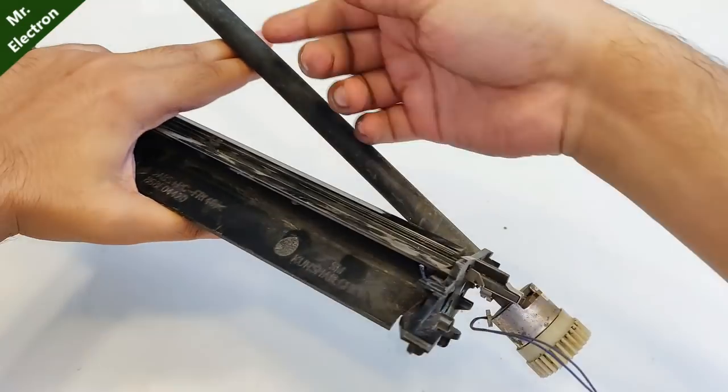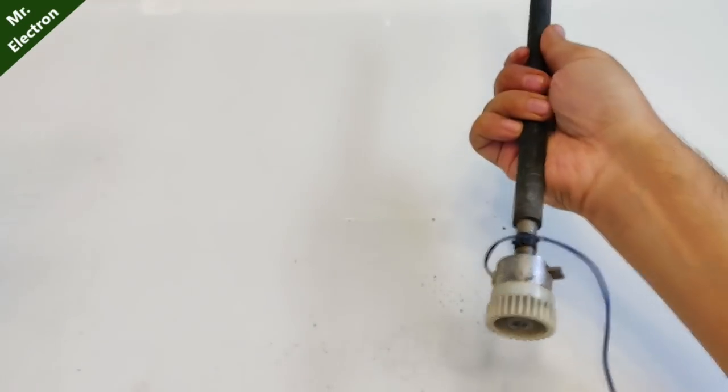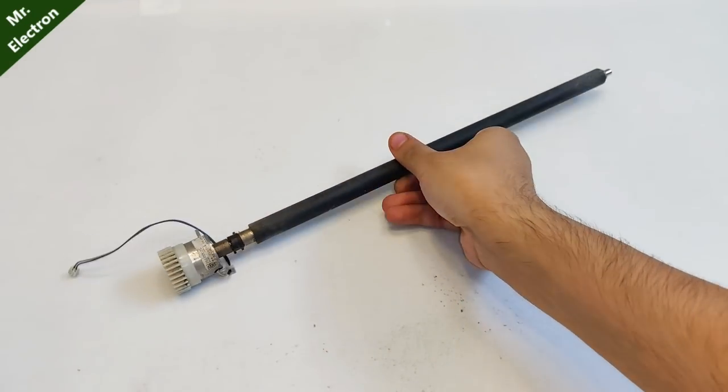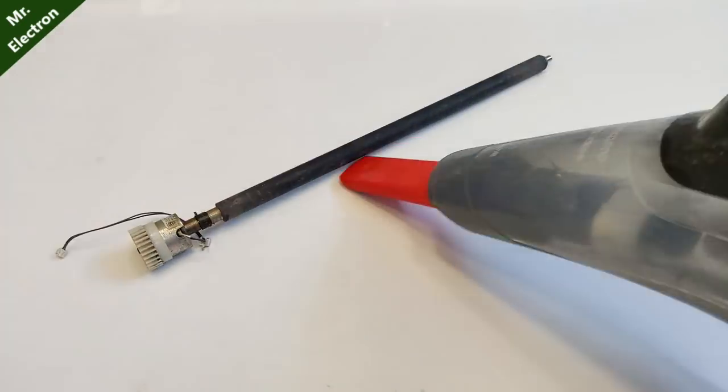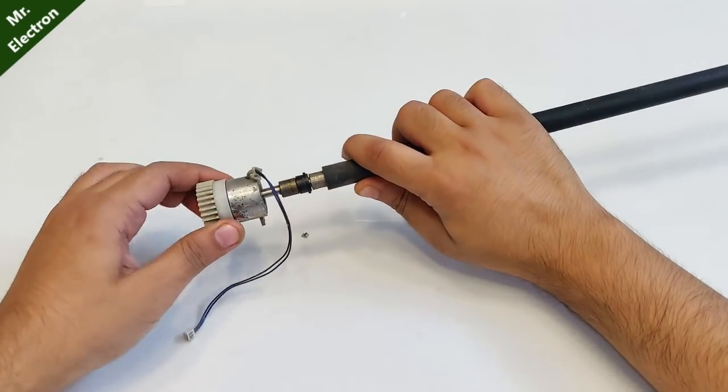Hi guys, you are watching channel Mr. Electron and this what you see is a part from an old photocopy machine or Xerox machine. So today I'm going to use this part to make a very strong electromagnet.